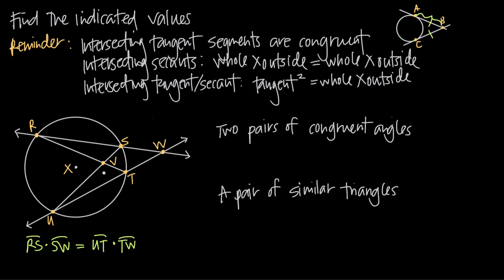They won't necessarily be congruent triangles where all three interior angle measures and all three side lengths are the same. Instead, all three interior angle measures will be equal, but the side lengths may differ — one triangle might be larger than the other. Because they're similar triangles, we can identify congruent angles. For example, this angle here is congruent to this angle here, and these two angles are also congruent — either because of similar triangles or because they are vertical angles formed by two intersecting lines.